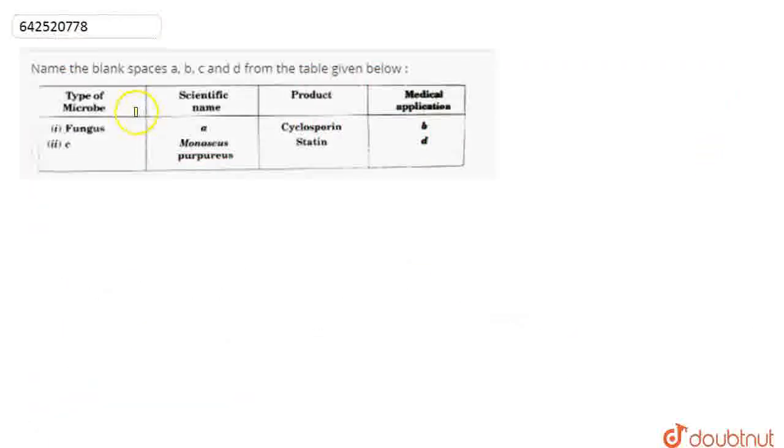In this question, we have to name the blank spaces A, B, C and D from the table given below. Here in the table, we are given the type of microbe, their scientific name, the product they produce, and their medical application.